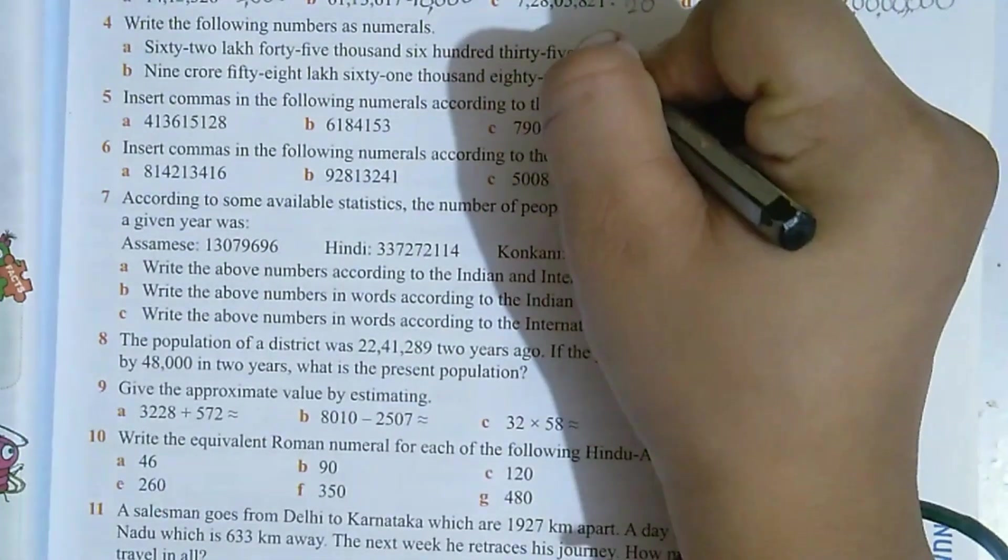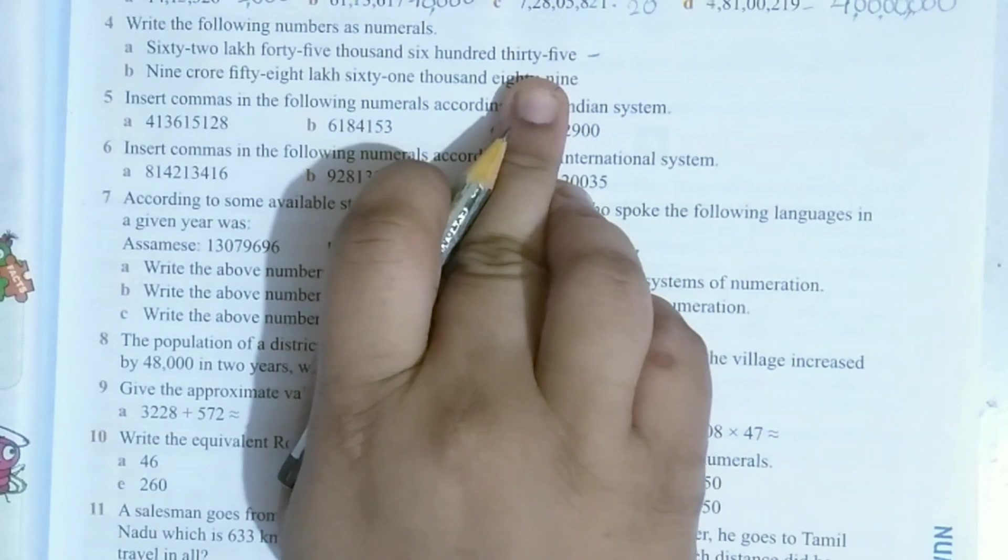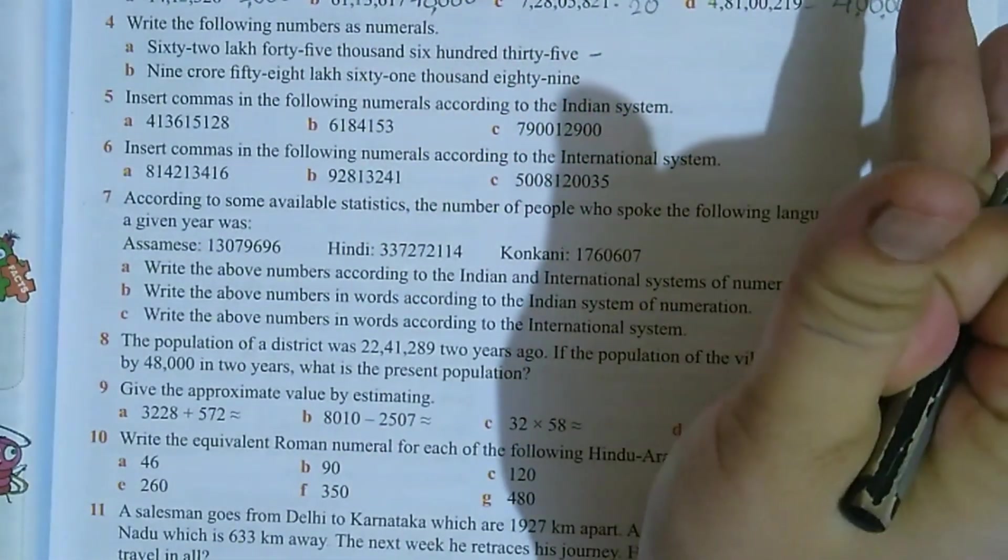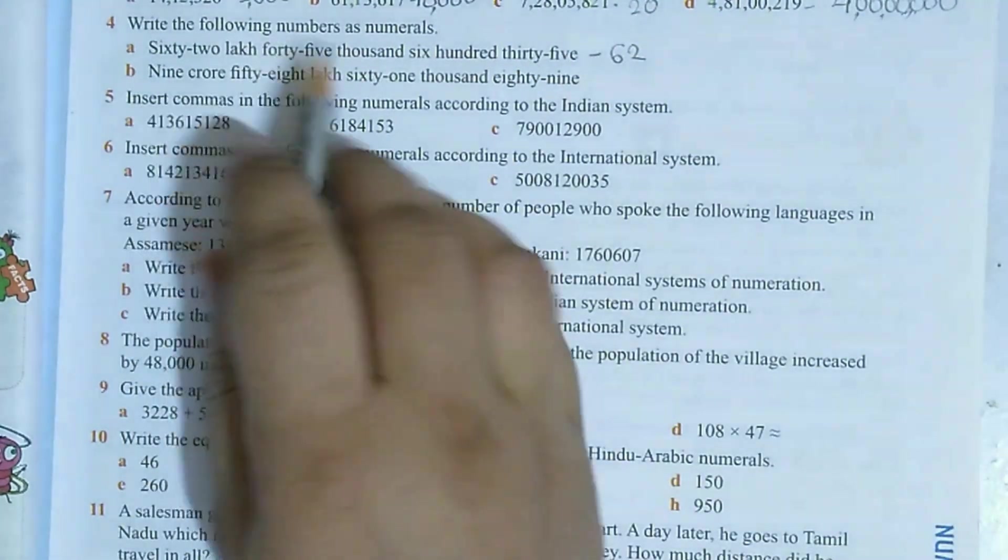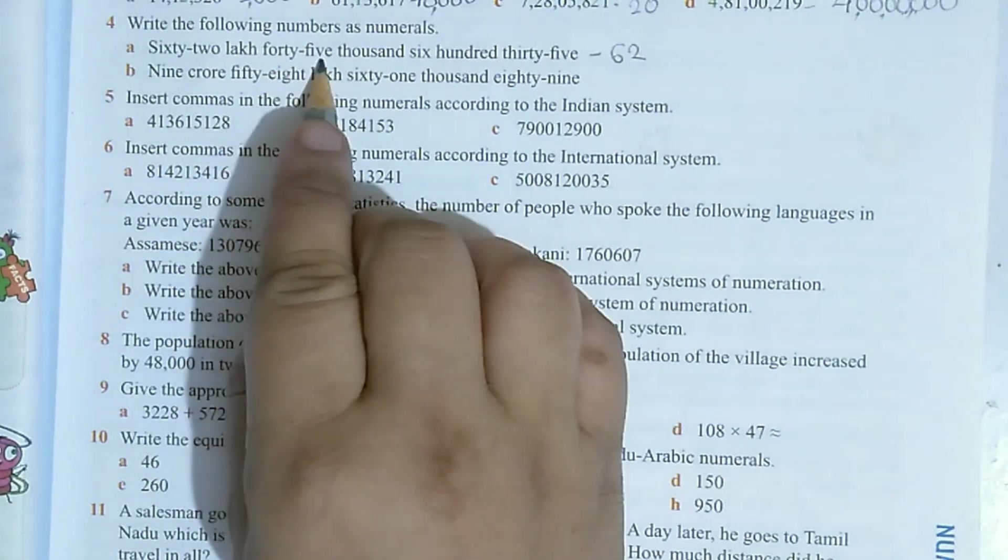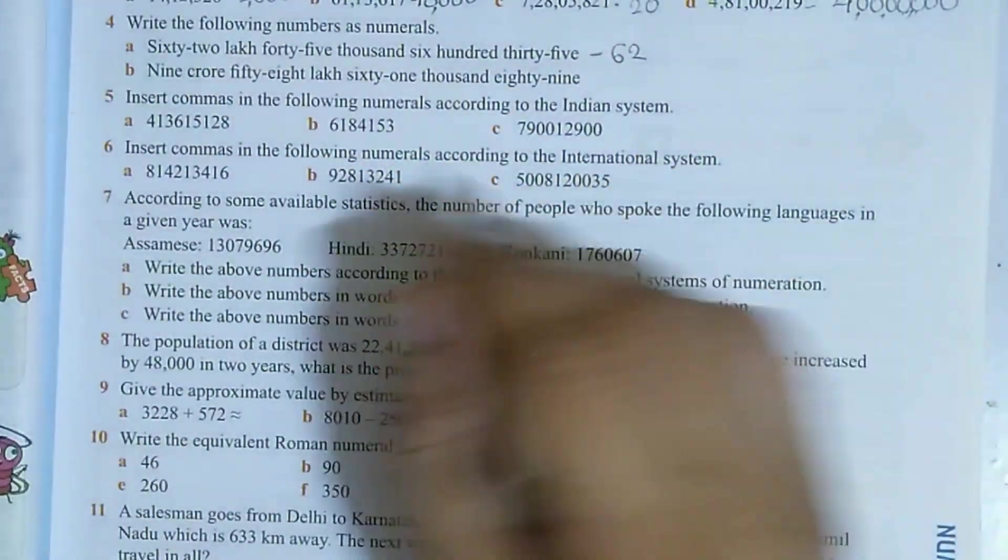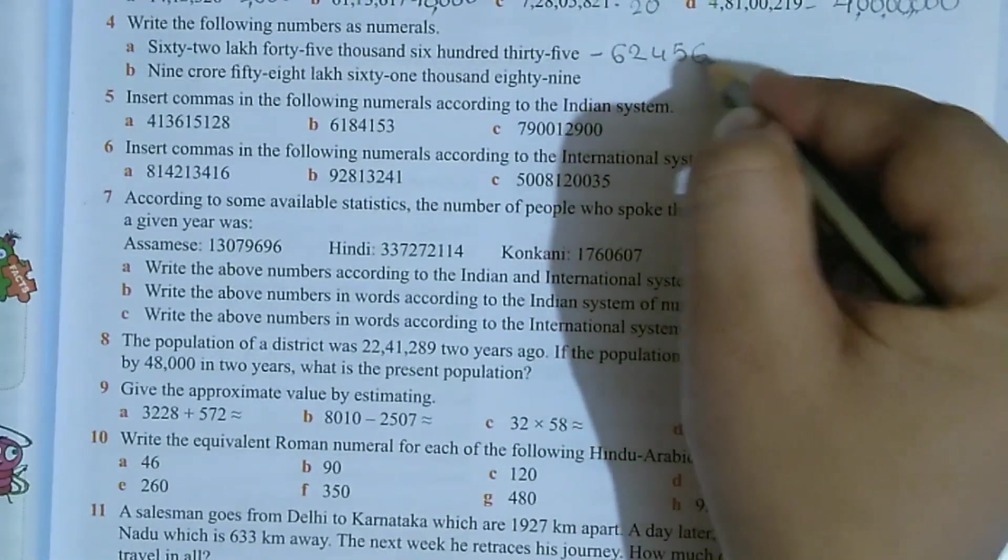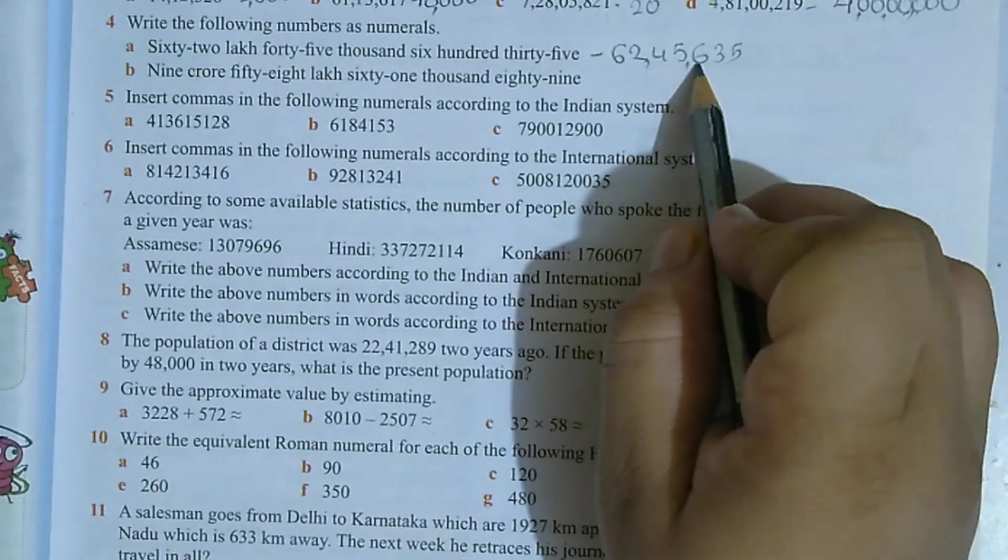This question I will solve here. Sixty-two lakh forty-five thousand six hundred thirty-five. You have to read the number carefully. Sixty-two lakh is said, meaning there should be ten lakh place, lakh place. Sixty-two lakh means 5 zeros should be there, 5 digits should be there. After lakh, forty-five thousand is there, hundreds place is there, tens place is there, ones place is there. No place is missing, so directly write the number. See, 62, then comma, 45, then 635. So now you can read: 62,45,635.